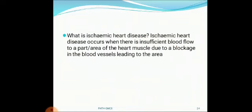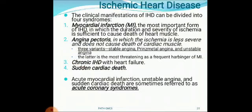What is ischemic heart disease? Ischemic heart disease occurs when there is insufficient blood flow to an area of heart muscle due to blockage in the blood vessel. The clinical manifestations of IHD can be divided into four syndromes: myocardial infarction — the most important form, where ischemia causes death of heart muscle; angina pectoris — where ischemia is less severe and does not cause death of cardiac muscle; chronic ischemic heart disease with heart failure; and sudden cardiac death. Acute myocardial infarction, unstable angina, and sudden cardiac death are sometimes referred to as acute coronary syndrome.